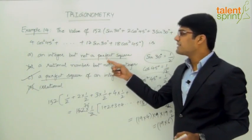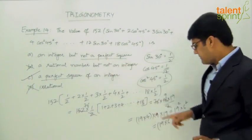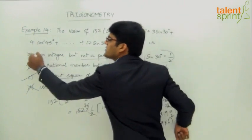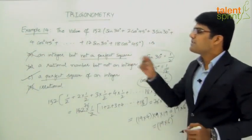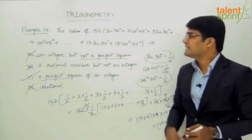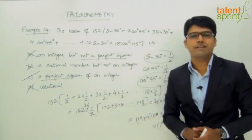Option A is wrong because it says it is not a perfect square. We are clearly getting a square here. So it is a perfect square. Hence option A is also ruled out. So the answer for this question has to be option C. That is, the value of the expression would be a perfect square of an integer.